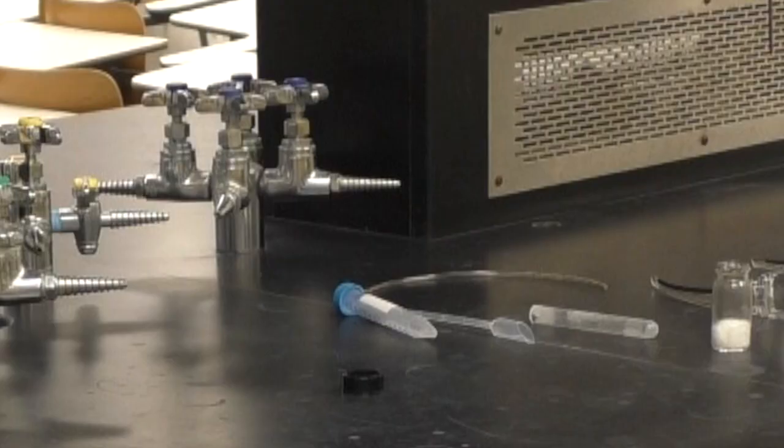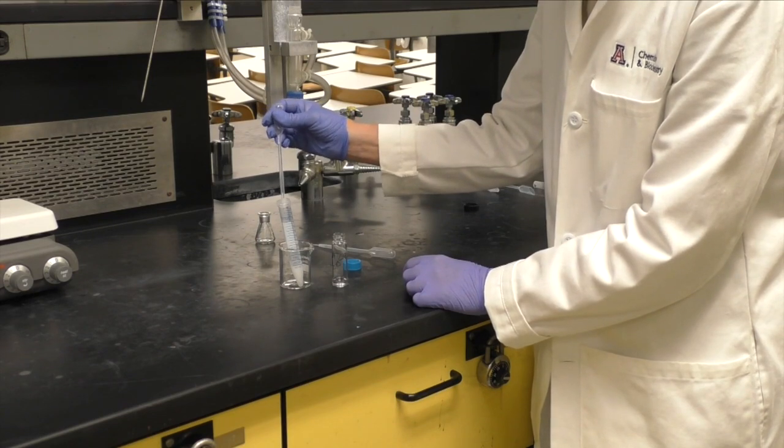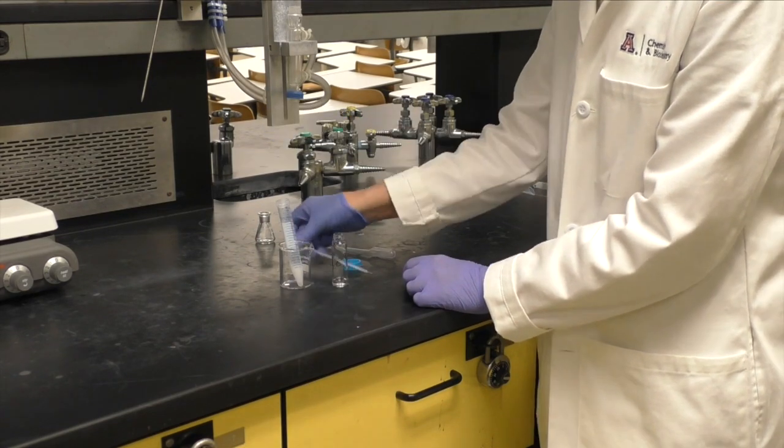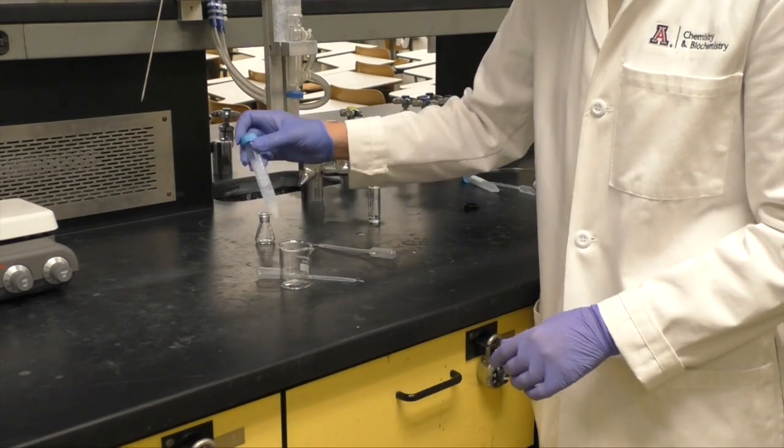Cap the tube you just removed the layer from and lay it aside. Add another 1.5 milliliters of water to the organic layer. Shake that tube well and again allow the layers to separate.